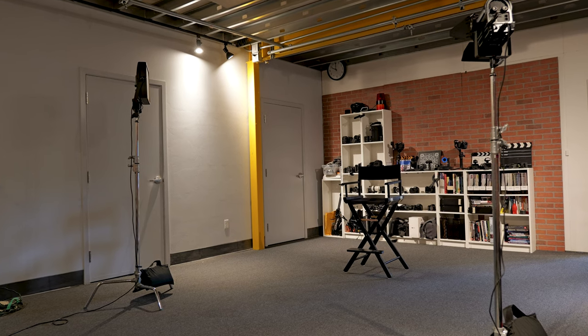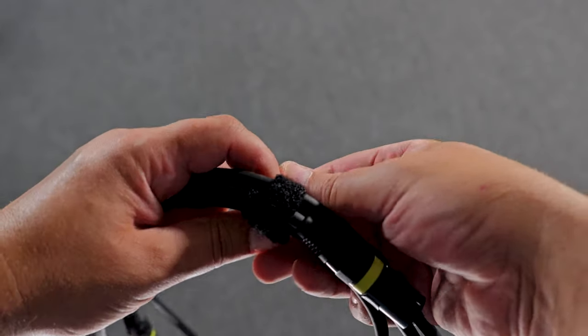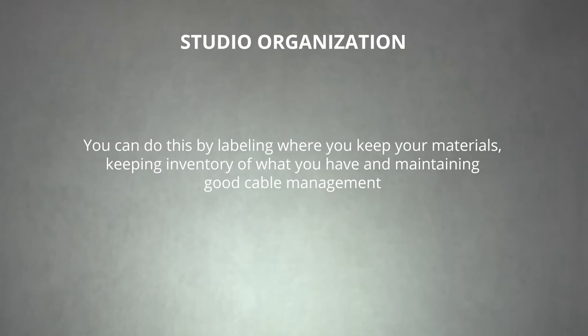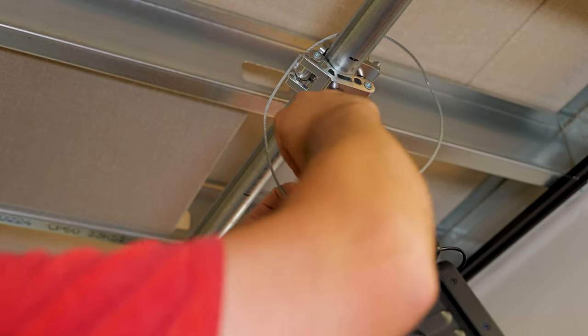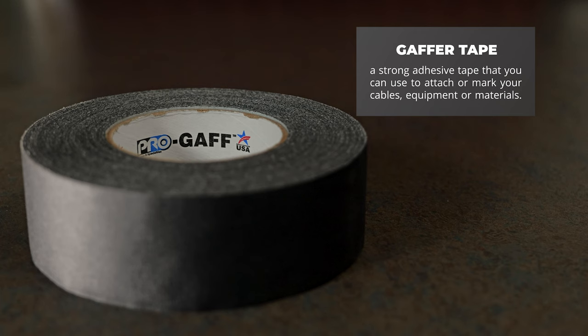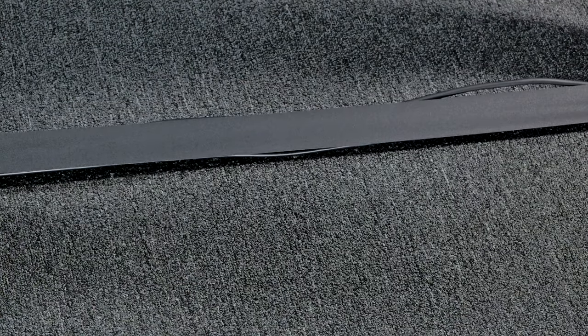Lastly, you should consider your studio organization — how you arrange and store your equipment and materials. You always want to keep a tidy studio space. It not only makes it easier to find your equipment, but also makes it much easier to navigate the space. Studio organization is more than just putting things away; you have to create a workflow that will streamline your setup process. You can do this by labeling where you keep materials, keeping inventory of what you have, and maintaining good cable management. Using cable ties will help you organize and secure your cables — they're easy to apply and remove, yet strong enough to hold cables in place. Ensure that all overhead lights are secured with safety cables, using metal wires or chains to stabilize your lighting equipment and prevent accidents. This protects your equipment from damage and keeps your studio safe for everyone. The most flexible tool is gaffer's tape — a strong adhesive tape you can use to attach or mark your cables, equipment, or materials, and to prevent tripping hazards or confusion when moving around your studio.